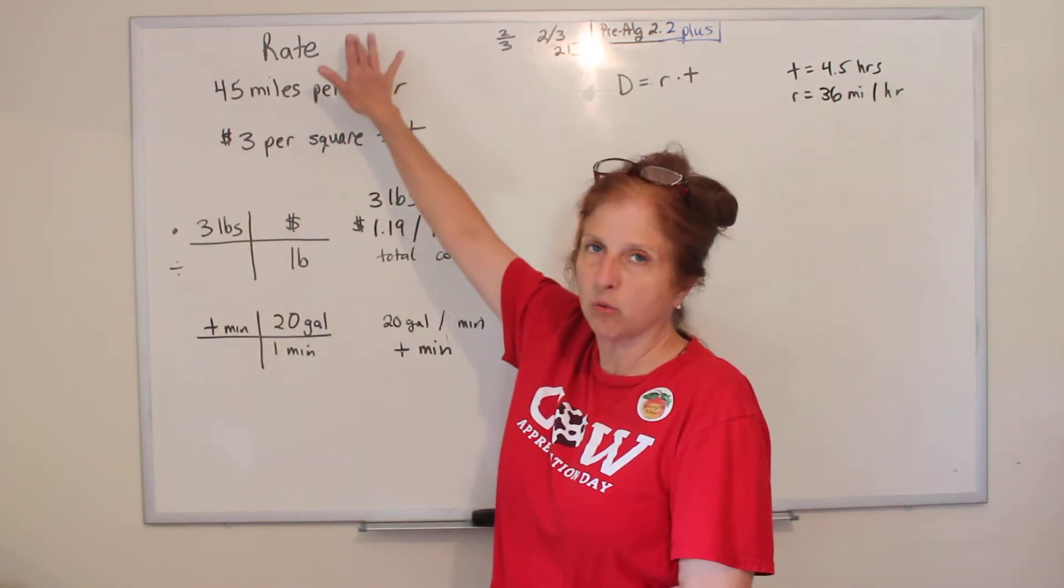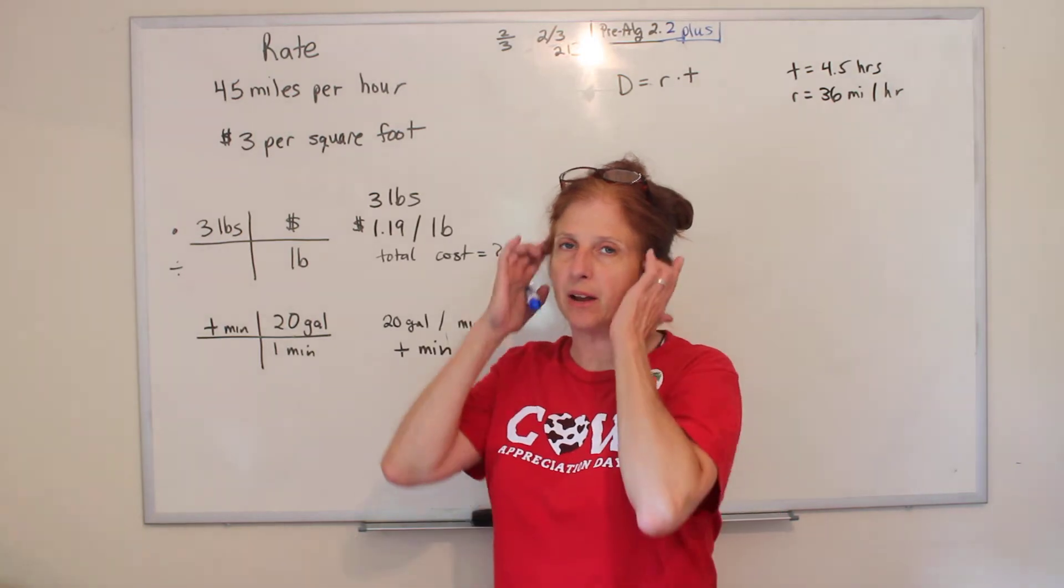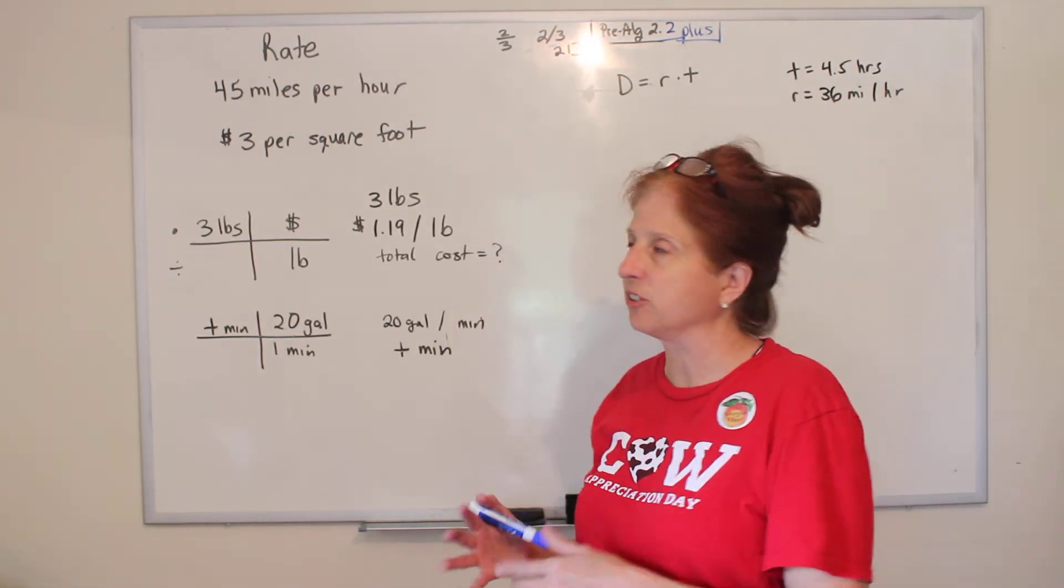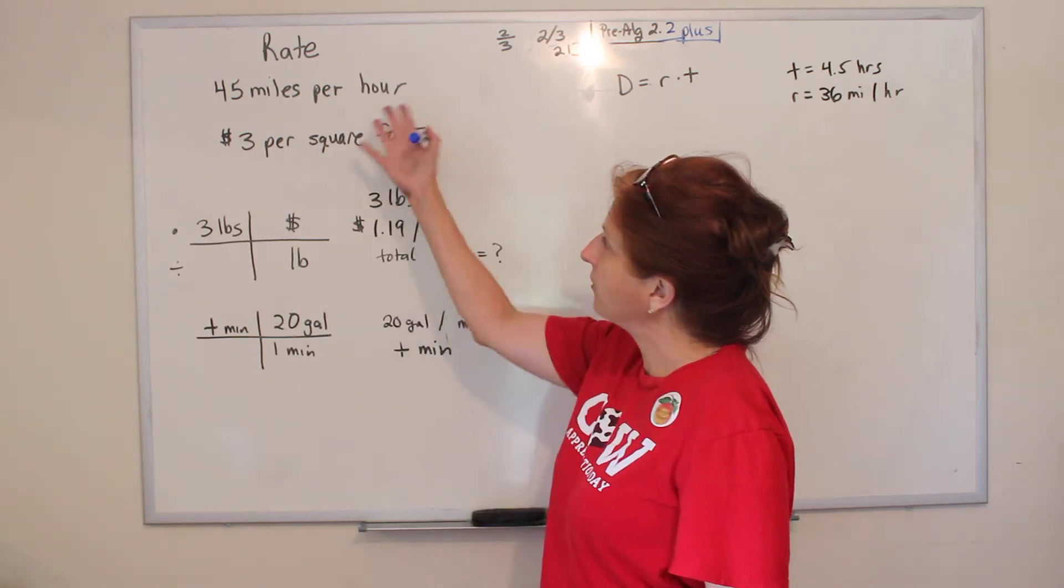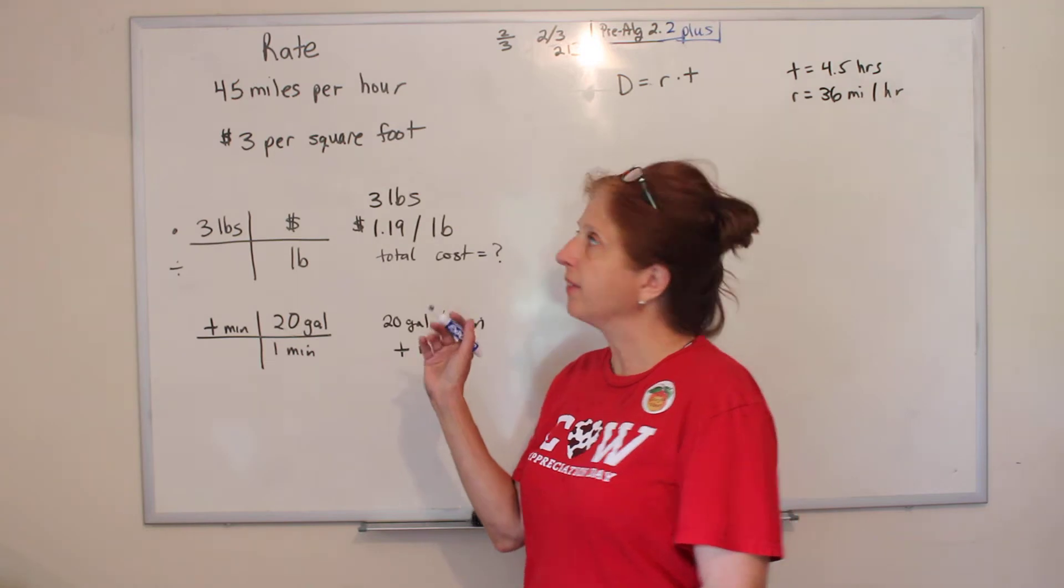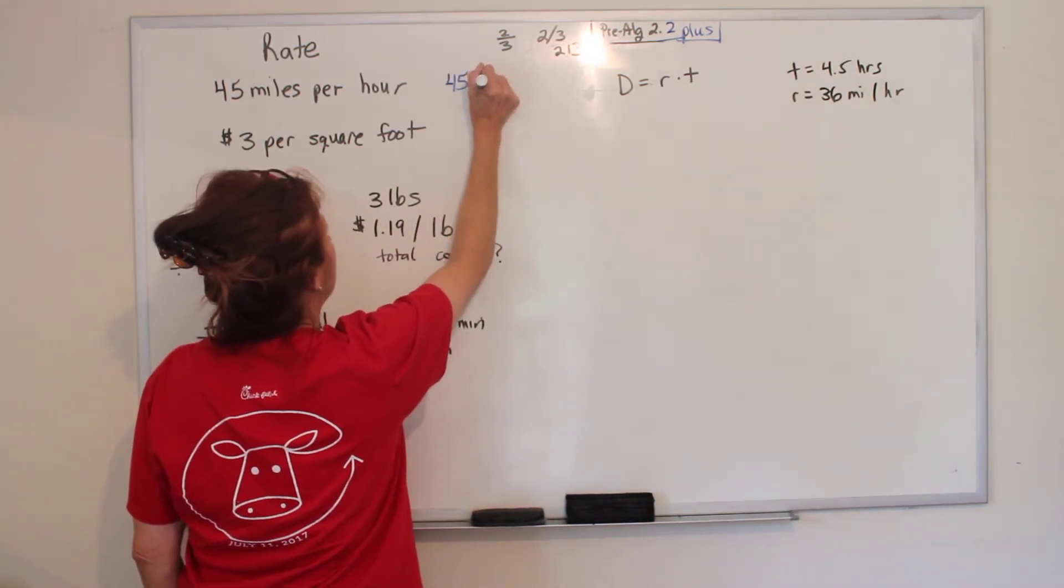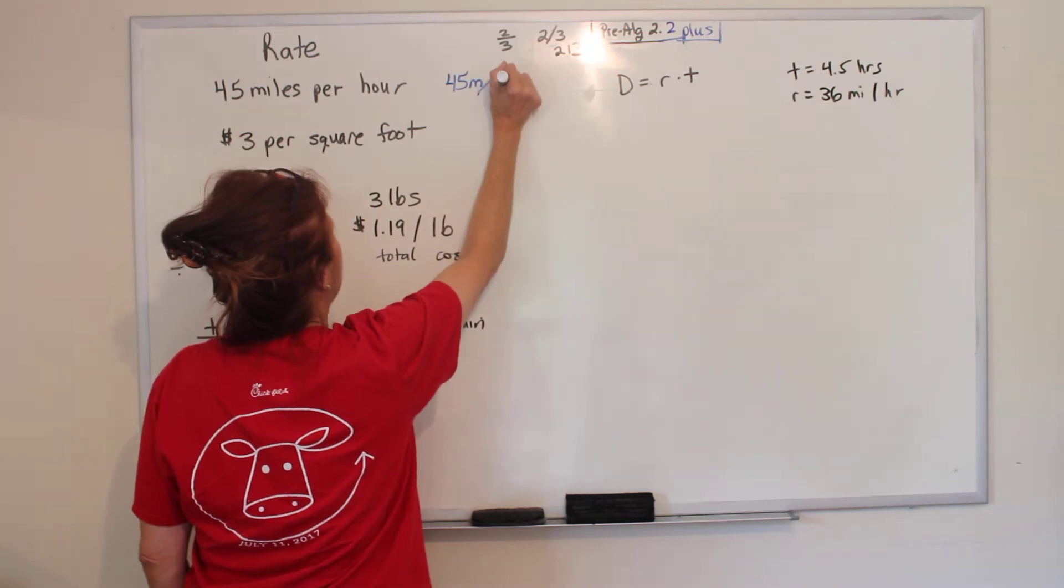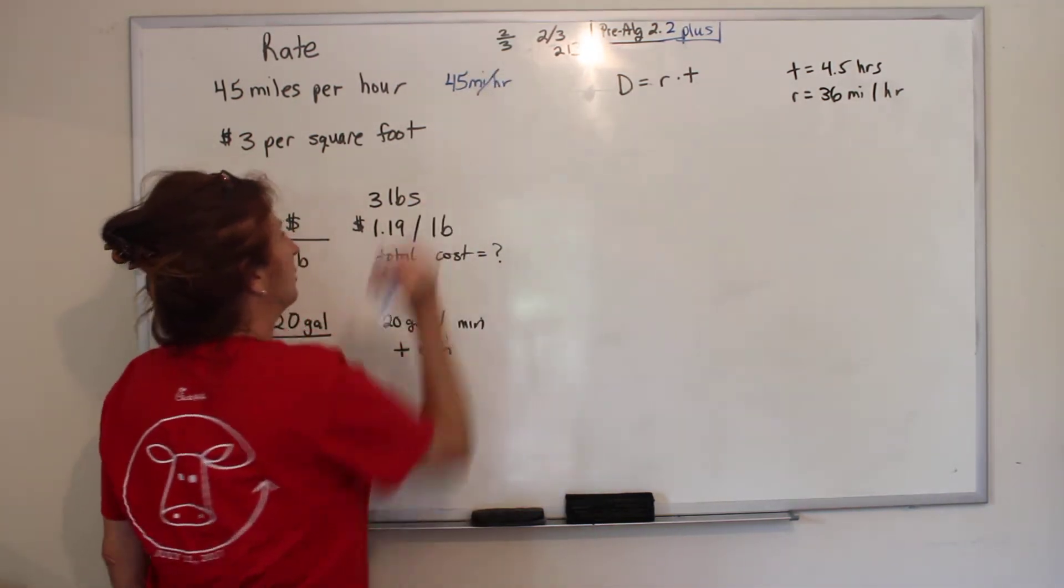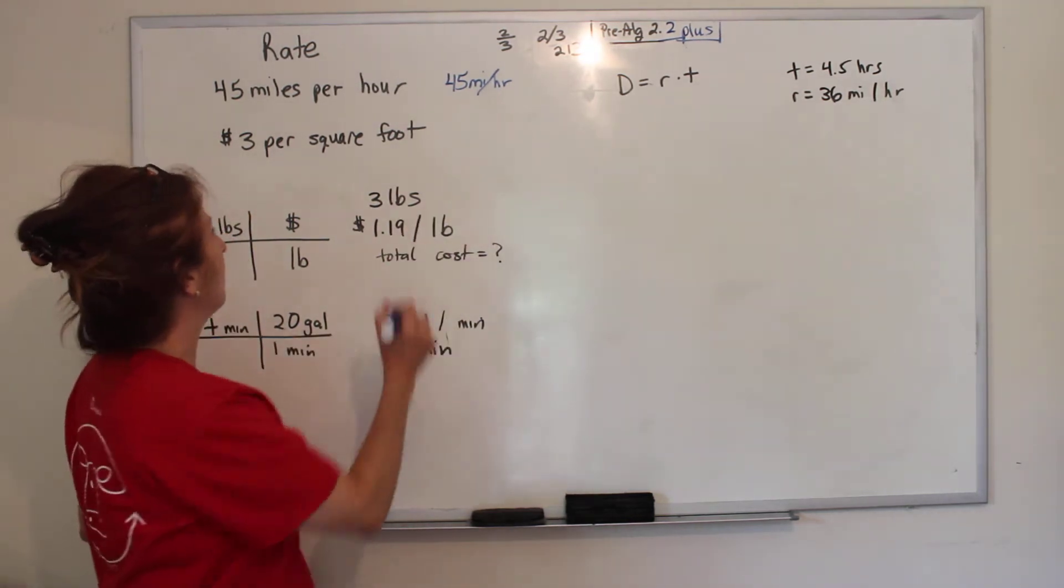And this time we're going to learn about rate. This is really adding to what I showed you already about doing unit analysis, dimensional analysis. So rates are things like 45 miles per hour. How you write that in symbols is you write 45 miles and then a slash hour. That's 45 miles per hour.